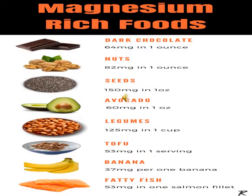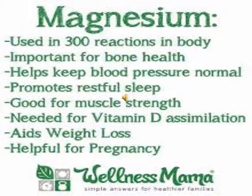This figure shows magnesium-rich foods. Magnesium is used in 300 reactions in the body and is important for bone health. It helps keep blood pressure normal, promotes restful sleep, and is good for muscle strength. It helps in vitamin D assimilation and helps in weight loss.